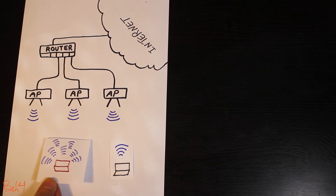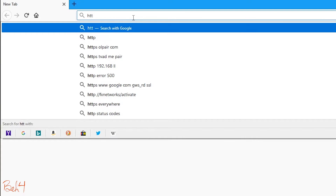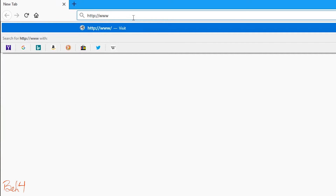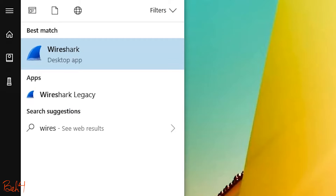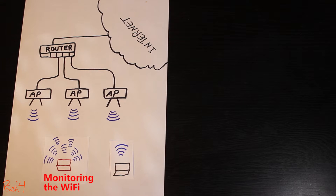Any data sent over an unsecured wireless network is in plain sight for anyone to grab over the air. That simply means if I go to a website that sends data in clear text, then anyone with packet analyzer software who can monitor the wireless network can easily capture my information. So it's not a good idea to send confidential and sensitive data over an unsecured network.